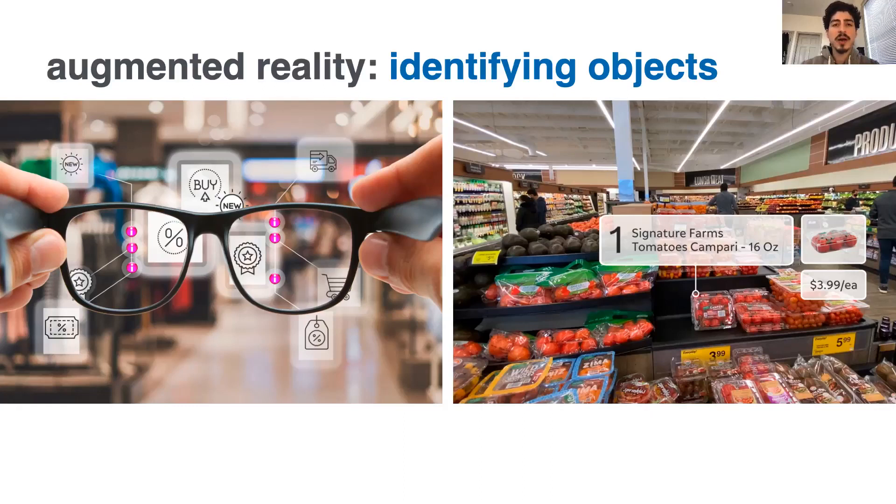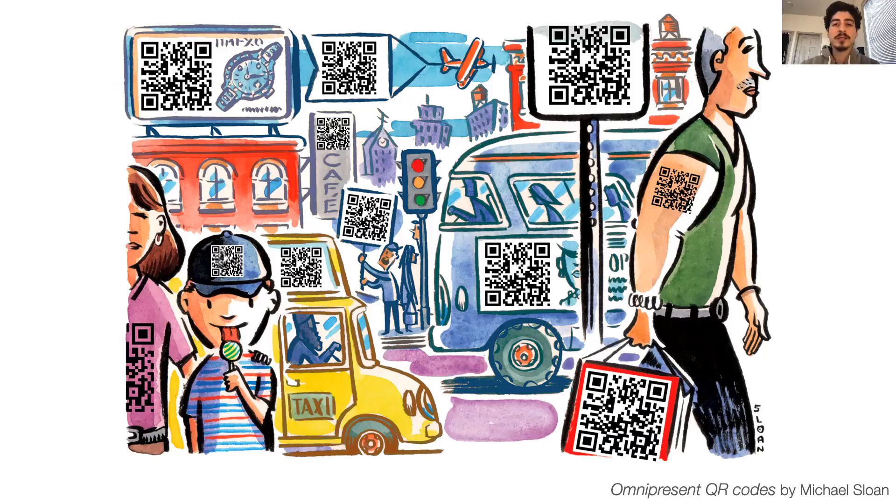Imagine you're at a store browsing different items. You'd like to get further information about the products you're considering, the unit price, recipes, calorie information, or cheaper alternatives. For this to work, the objects around us need to carry labels that describe what they are and communicate this information to digital devices.